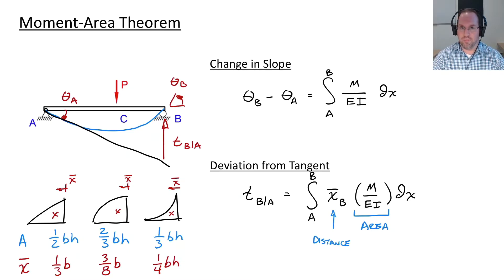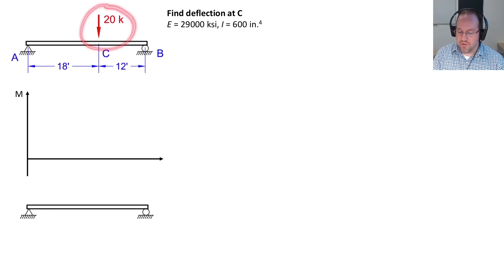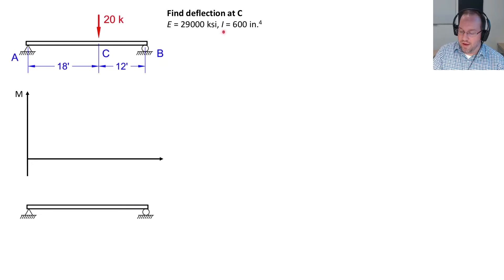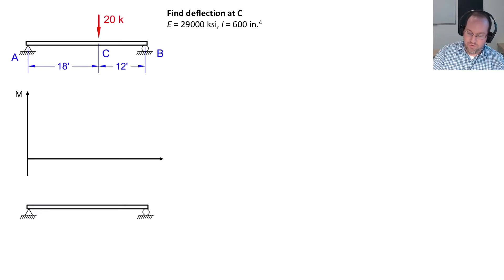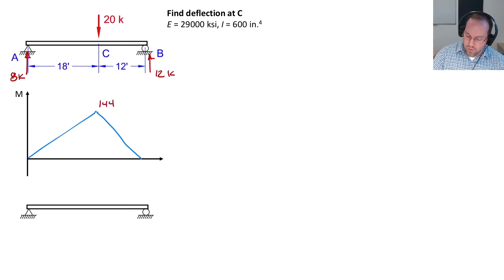Let's dive into example problems. For the first example, we consider a 30-foot long beam with a 20-kip force applied at about 60% across the span. The modulus is 29,000 KSI — typical of steel — and the moment of inertia is 600 inches to the fourth. The first thing we need to do, as always, is solve for the reactions and get the moment diagram. Solving equilibrium gives a reaction at A of 8 kips up and at B of 12 kips up. The moment diagram shows two triangles coming together with a peak of 144 kip-feet.